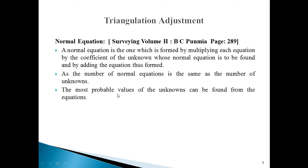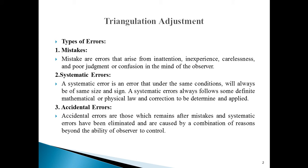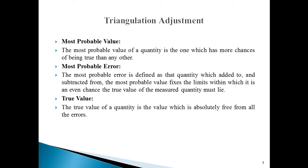In Unit 4 on Triangulation Adjustment and Theory of Errors, our intention is that when we have a number of observations collected from various surveys, we want to find the most precise value for a physical angle or a particular station. We conduct multiple observations on the same station, and the selected angle must be accurate. We consider mistakes, systematic errors, and accidental errors. The most probable value is the value with the maximum chance of being accurate or true, while the true value is accurate and free from all kinds of errors.